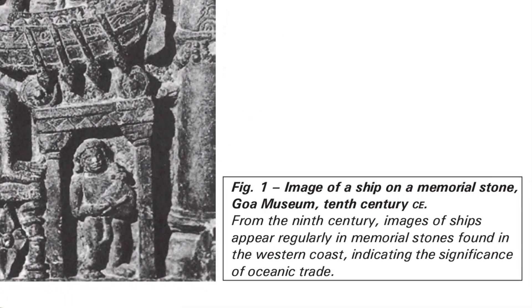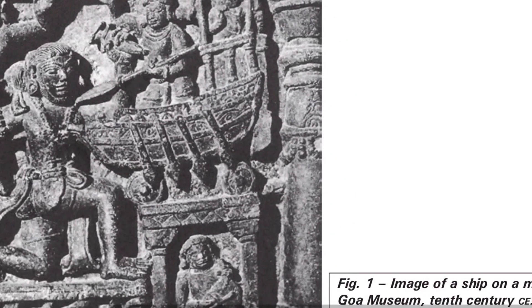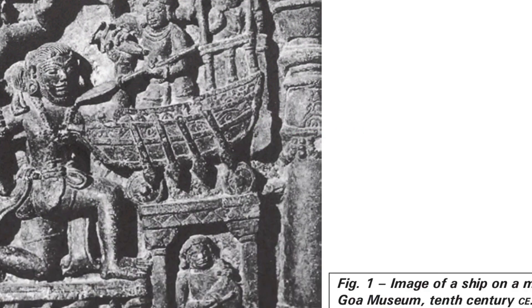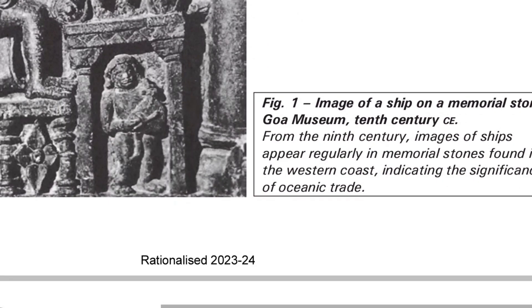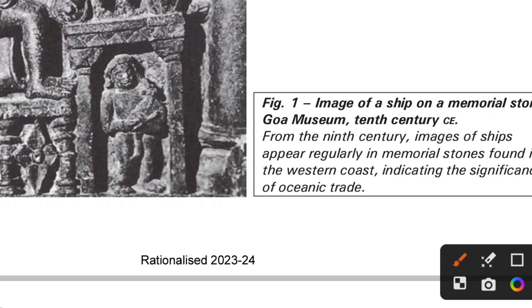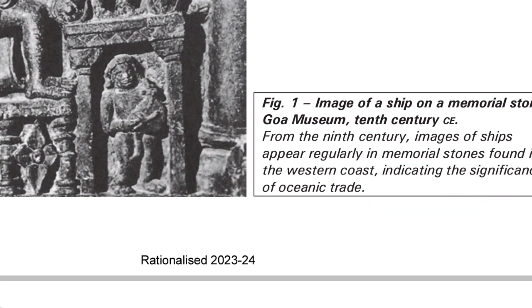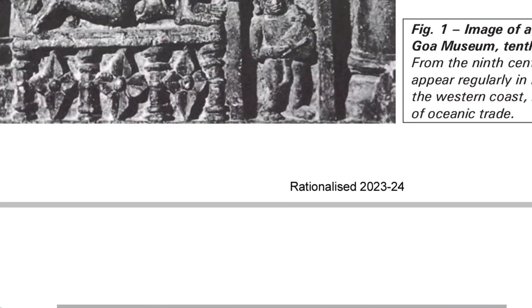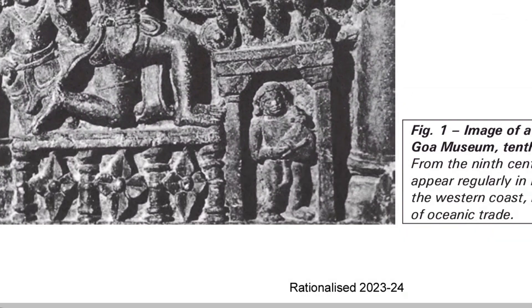There is a photo — an image of a ship on a memorial stone from the Goa Museum, dating to the 10th century. From the 9th century, images of ships appear regularly in memorial stones found on the western coast, indicating the significance of oceanic trade. This shows how important oceanic trade was at the time of the 9th and 10th centuries.